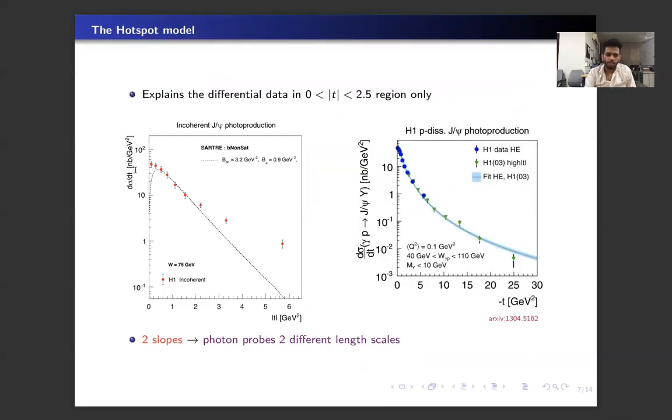Now when we calculate the differential t-distribution at large momentum transfer, we see that the hotspot model fails. Moreover, we have data up to very large momentum transfer. We see that in the experimental data we have two different slopes, which means that the photon probes the geometry at two different length scales.